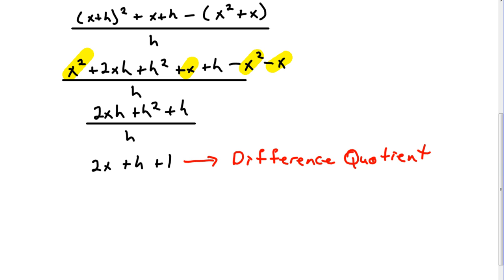And then to find the rate of change, we will put 8 in for X and 0.01 the change in for H. So the rate of change then would be 2 times 8 plus 0.01 plus 1, which equals 17.01.